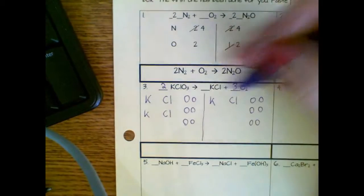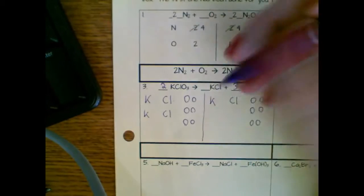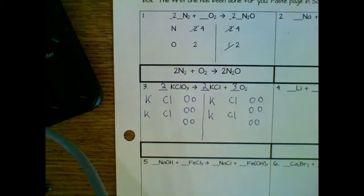So I go back to the other side where I don't have enough K's or CL's and I say, well, if I've got two over here, then I need two over there. And now my chemical equation is balanced.